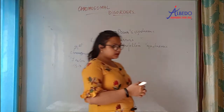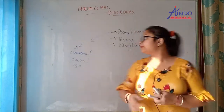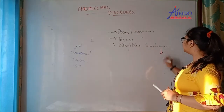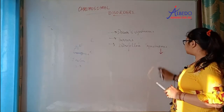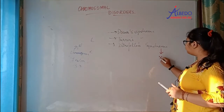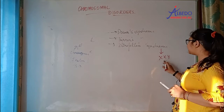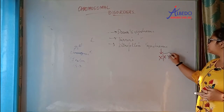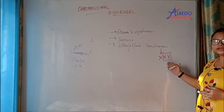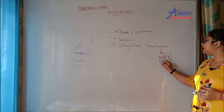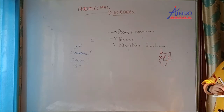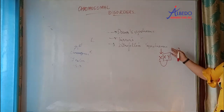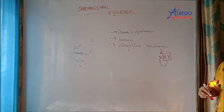What happens in Turner's syndrome? First, let us discuss Klinefelter syndrome. In Klinefelter syndrome, what happens is that in a male there is an extra X chromosome. Normal males have XY, but in Klinefelter syndrome the male has XXY. We will call it Klinefelter syndrome.